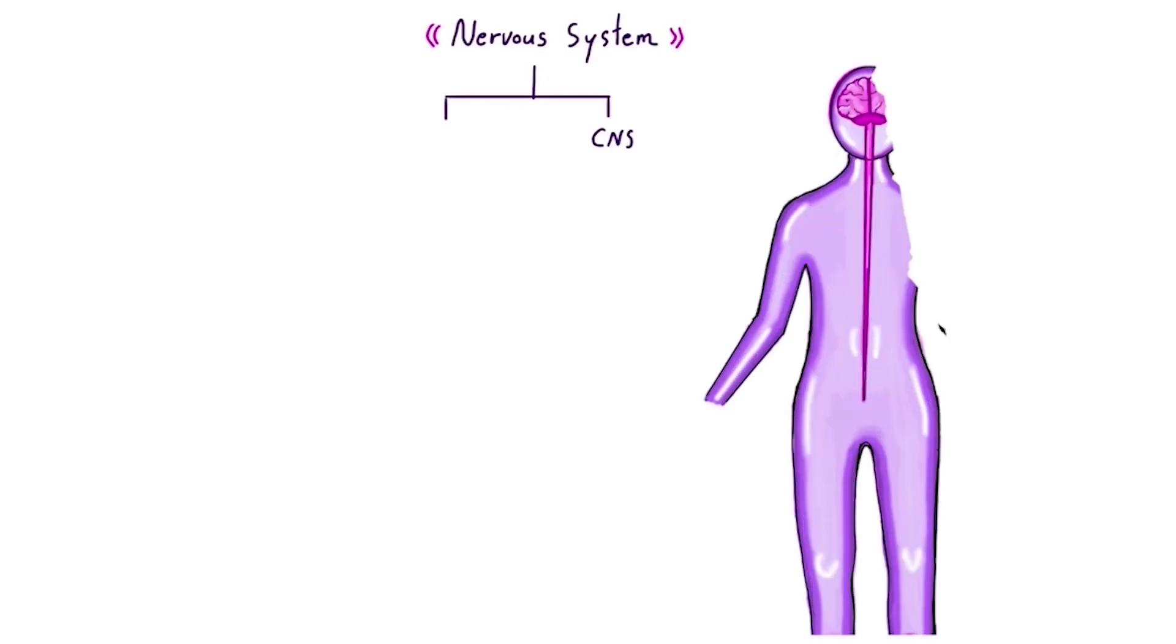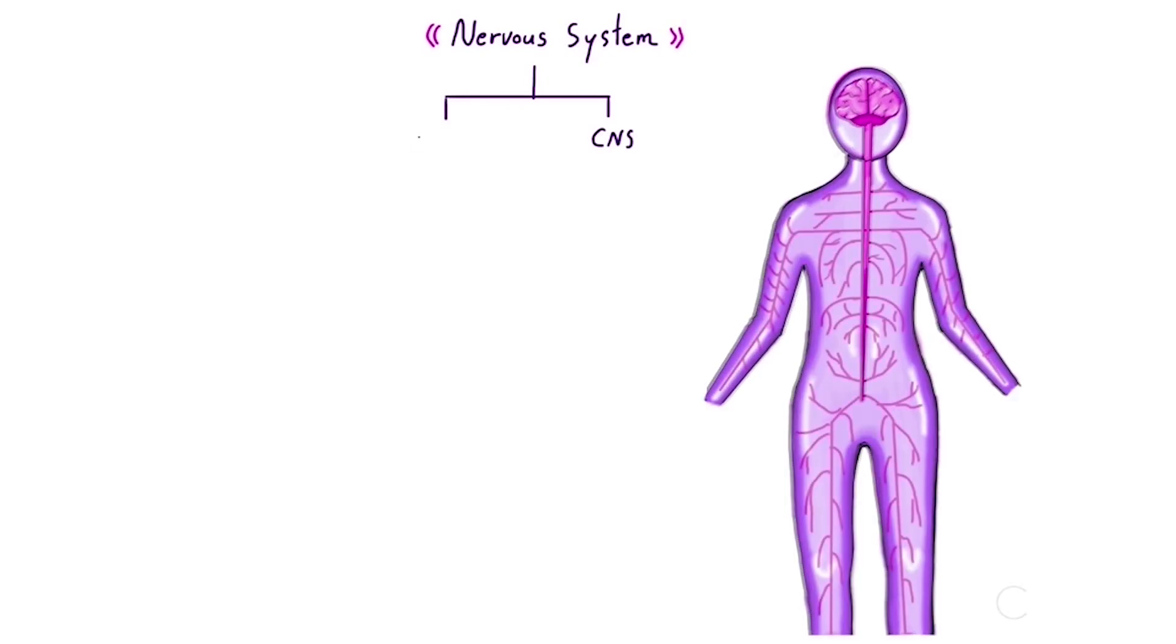So the nervous system basically has two main parts: the CNS, or central nervous system, and the PNS, or peripheral nervous system. I'll break down the CNS in a separate video, but in this one, we're focusing on the PNS. Think of the peripheral nervous system as a communication bridge between your brain and spinal cord and the rest of your body. It makes sure everything stays under proper control. The PNS itself is divided into two parts: the somatic system and the autonomic system.